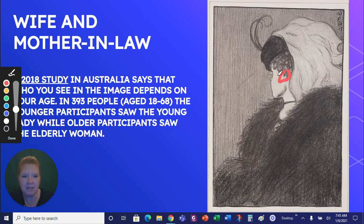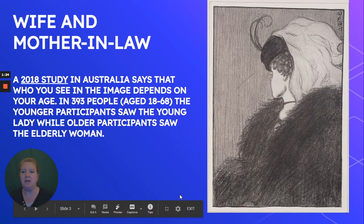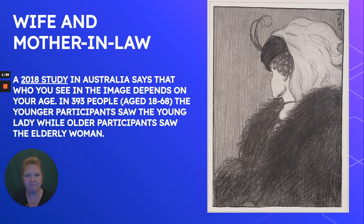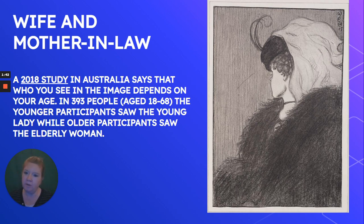And then the mother-in-law — this is one eye and this is the other eye. Here's her nose, mouth kind of frowning, and here's the chin. This is hair for both of them. In a 2018 study in Australia, who you see in the image depends on your age. They studied 393 people — not a huge sample size, but not tiny either. Younger participants tended to see the young lady, while older participants tended to see the elderly woman. Once you see them both, you can flip back and forth, but often it depends on your first impression.